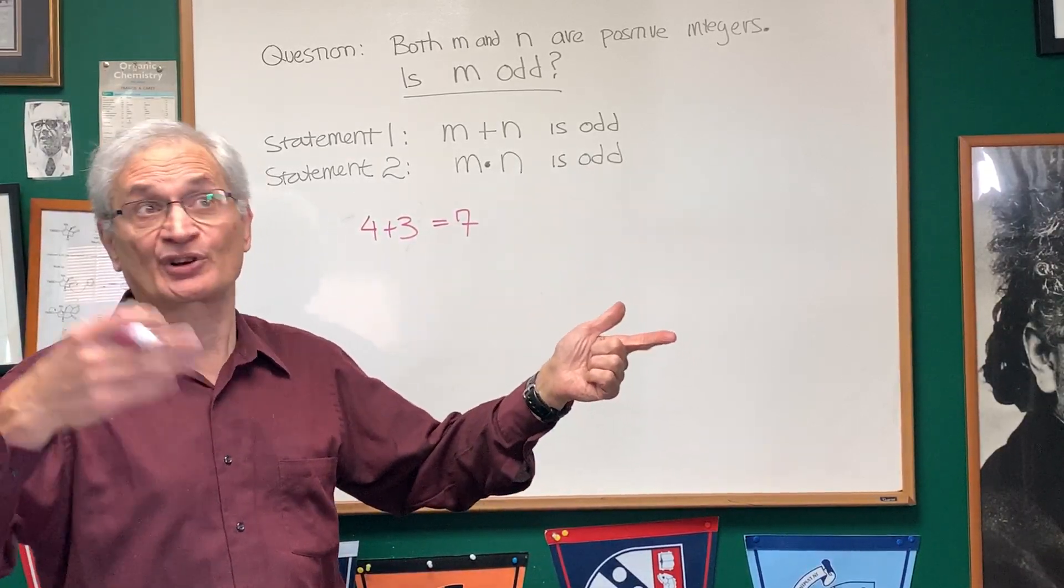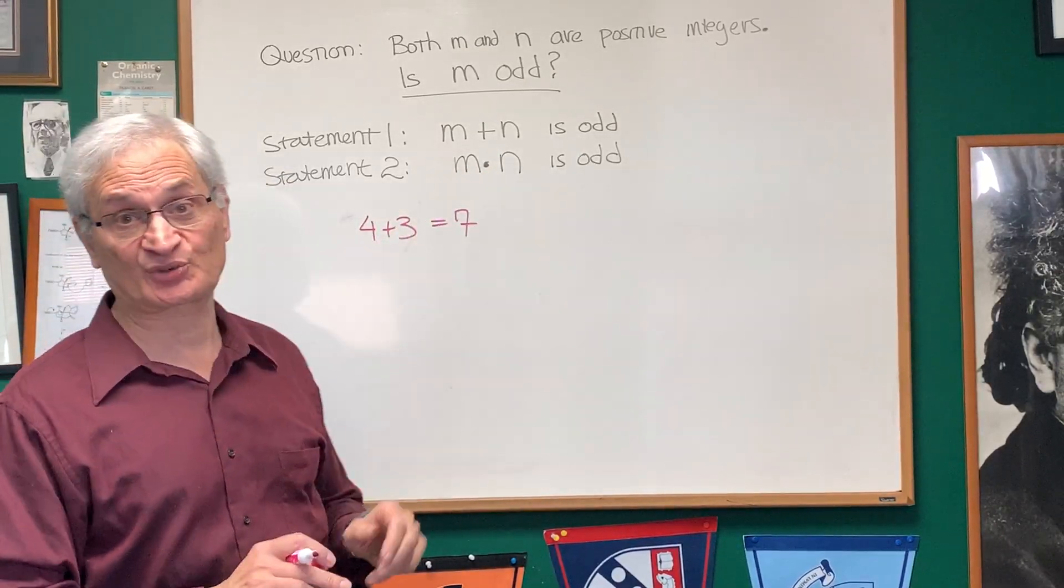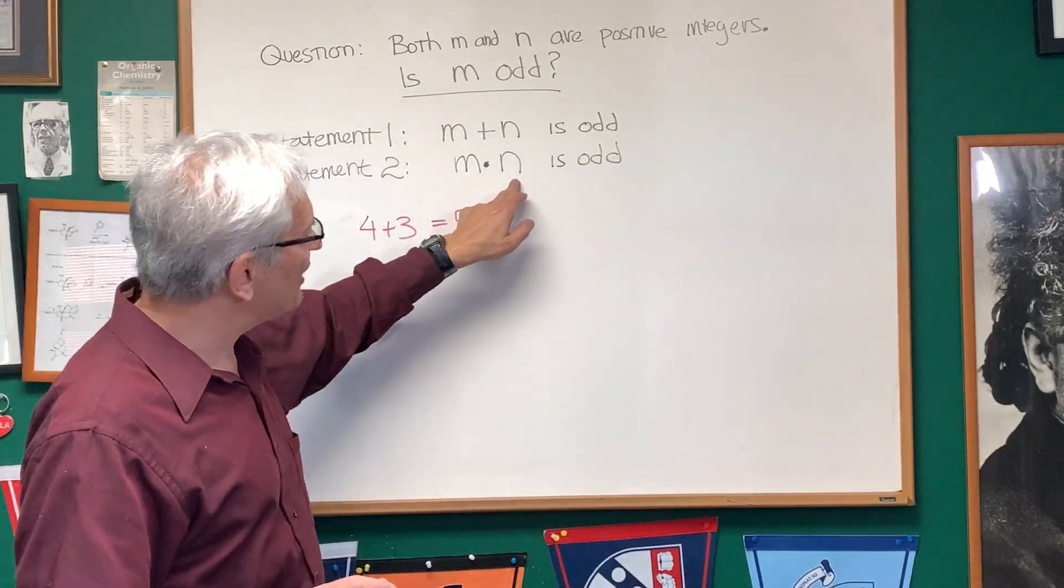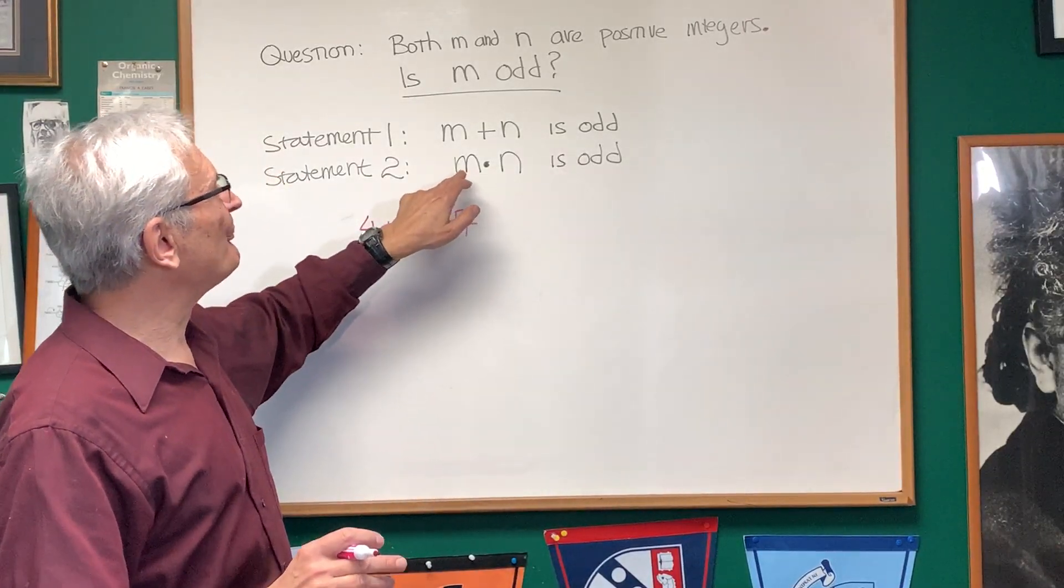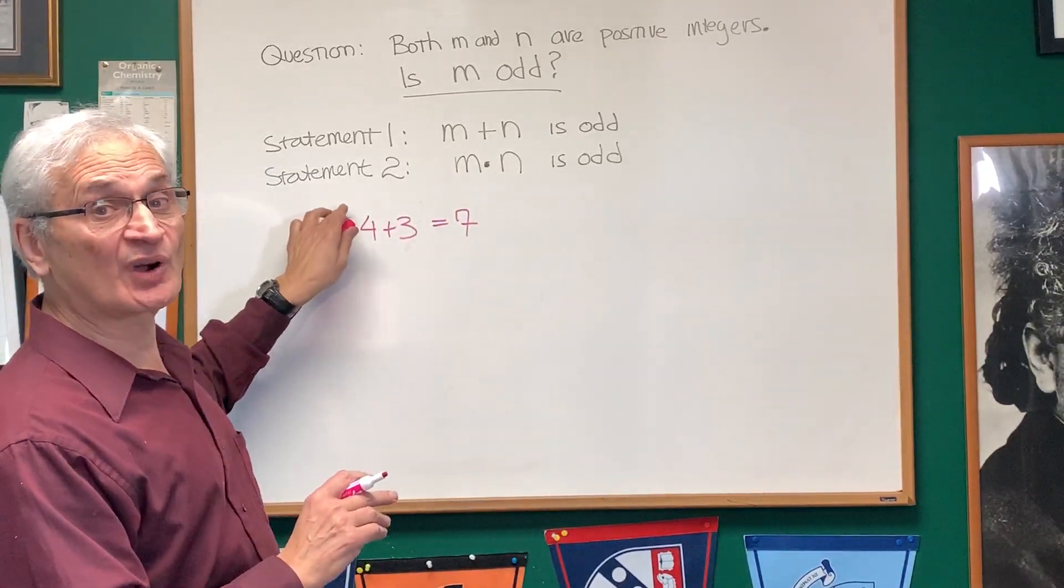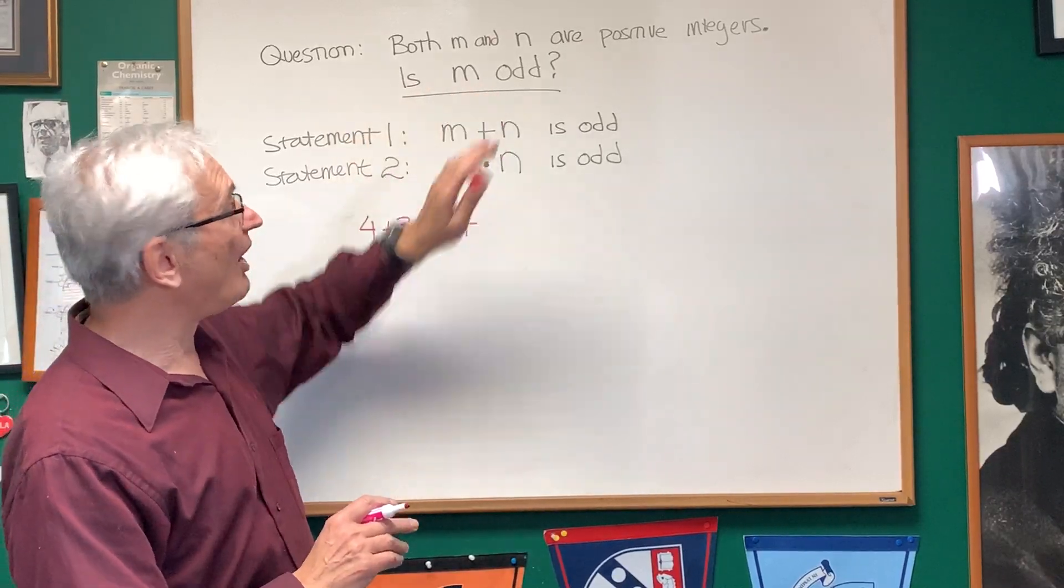Even times odd, that gives you an even number. Four times three is 12. And odd times odd, like three times seven is 21. The only possibility for M times N to be odd is if both M and N are odd. So just by statement two alone, we are able to answer the question. Is M odd? And the answer is yes.